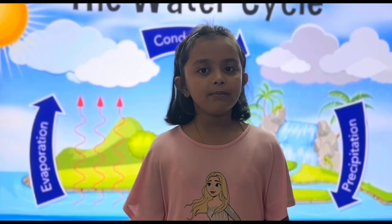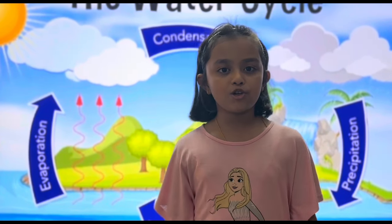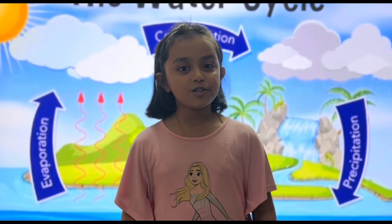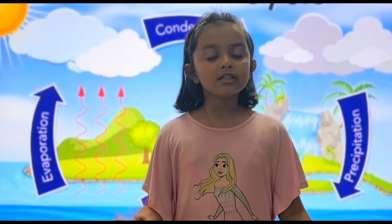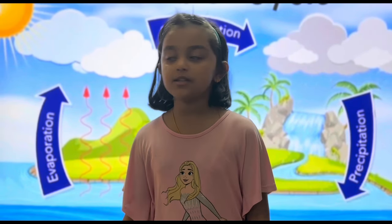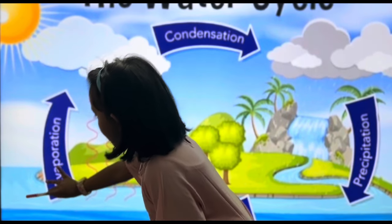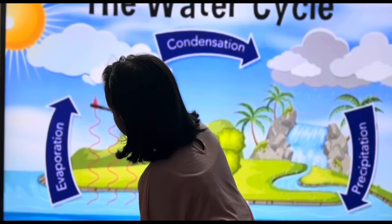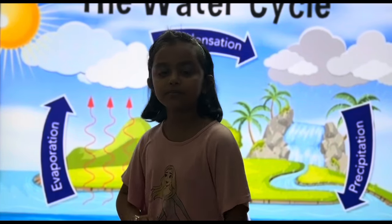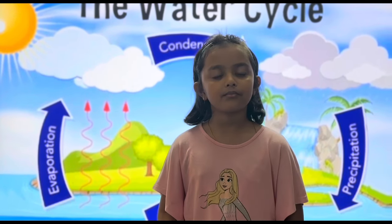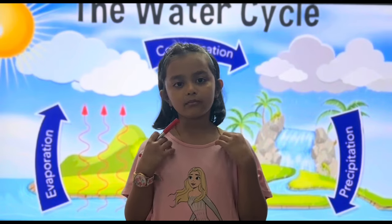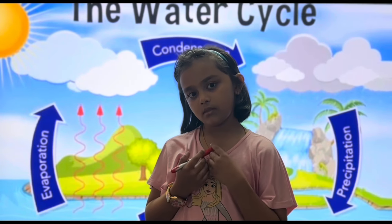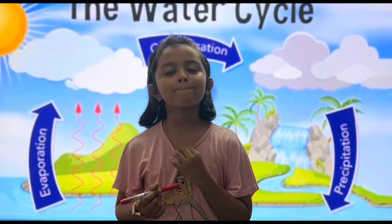The first step in the water cycle is evaporation. Evaporation is the process by which the sun's heat causes water to form water vapors. The sun's heat makes the water warm, which evaporates into the air. This process is called evaporation. So Tia, can you tell me some other examples of evaporation in our daily life?